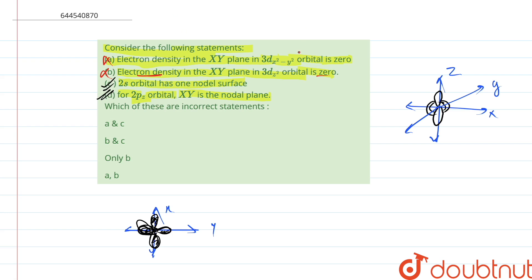So the 2 incorrect statements are, we had to identify the incorrect statements. So the only 2 incorrect statements are a and b which come out to be d option.